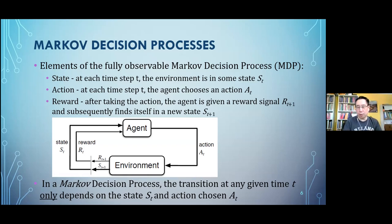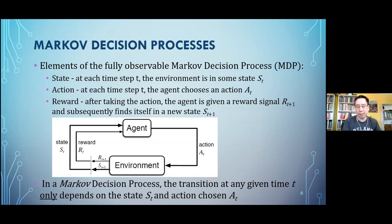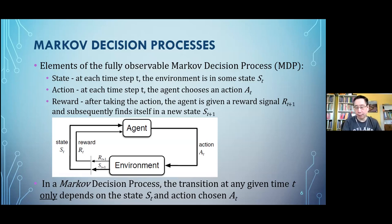To formally model this, we use Markov decision processes. The environment has different states you can be in, and in each state there's some number of actions you can choose. After taking an action and receiving a reward signal, you're placed in a new state. For the most part, MDPs do not limit what you can represent — the key requirement is that you pack a lot of information into the state.